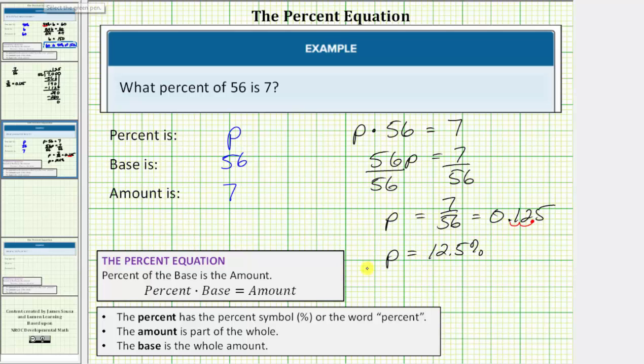So now we know 12.5% of 56 is seven. Of course, we can also say seven is 12.5% of 56. I hope you found this helpful.